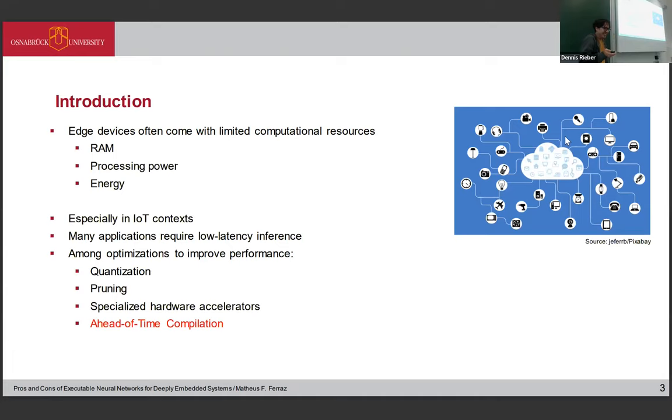For introduction, as past presentations have explained, edge devices are on the rise, the market is increasing, and they are really limited in computational resources such as RAM, processing power, and energy, especially in IoT contexts. They require low inference times when performing inference with neural networks. There are lots of techniques to improve performance, such as quantization, pruning, specialized hardware accelerators, and ahead-of-time compilation.